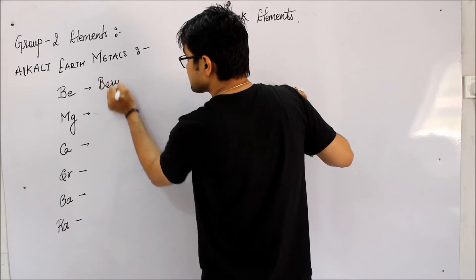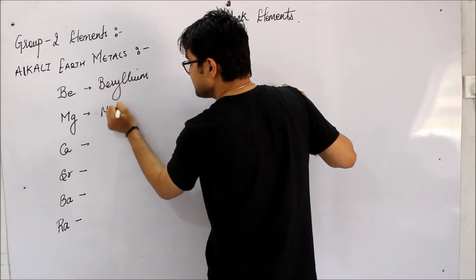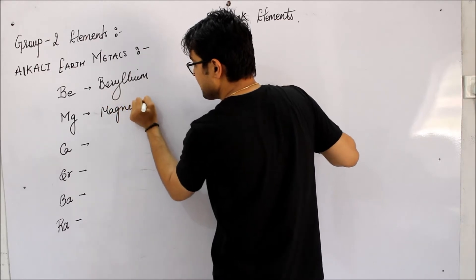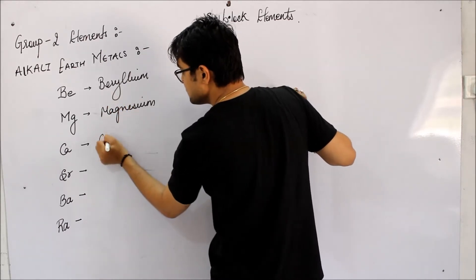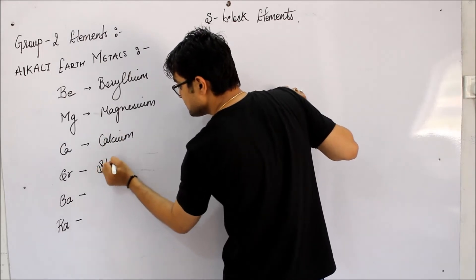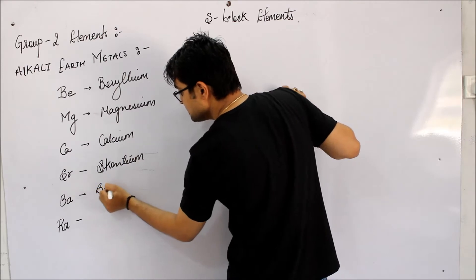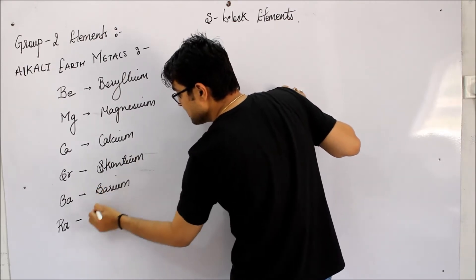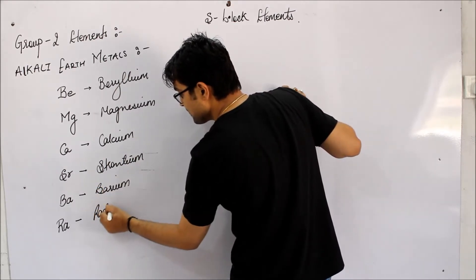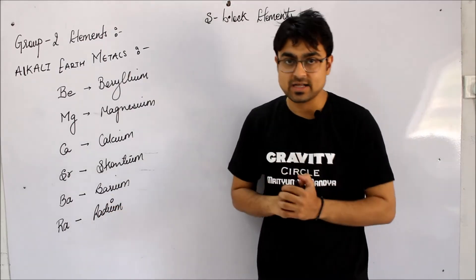Beryllium, Magnesium, Calcium, Strontium, Barium, Radium. So guys, these are your alkali earth metals.